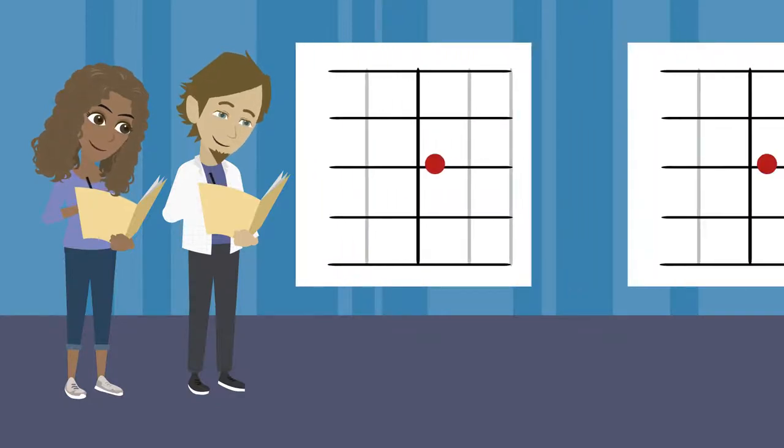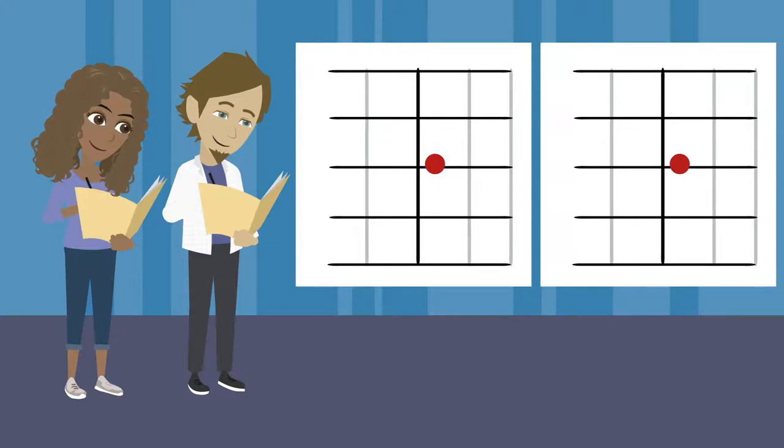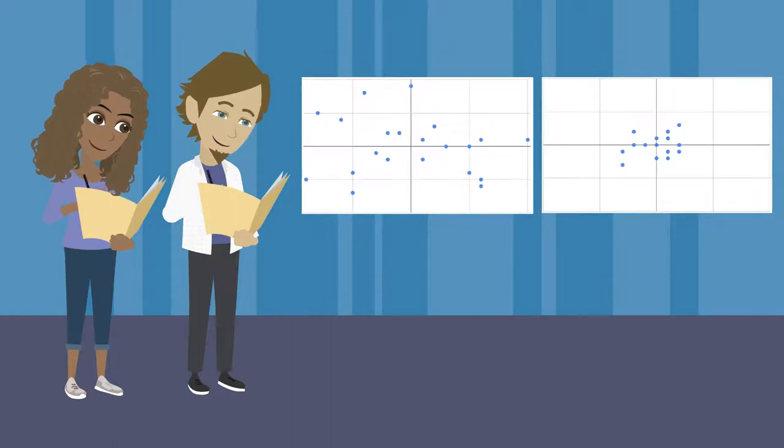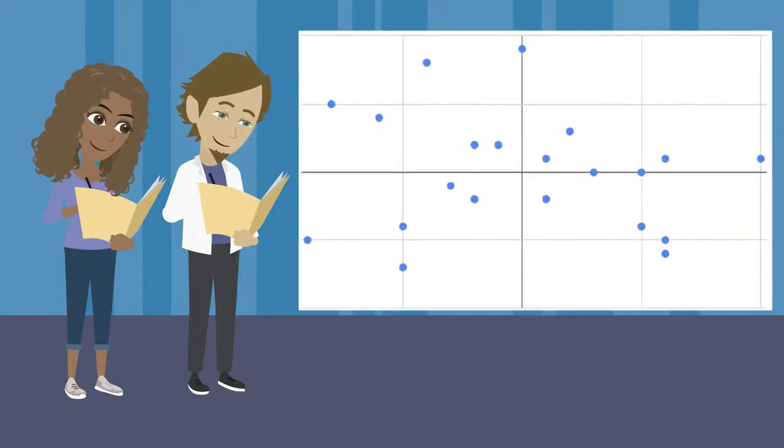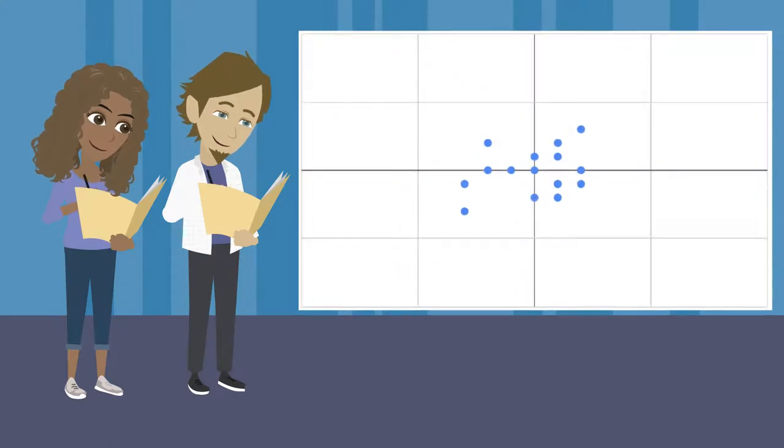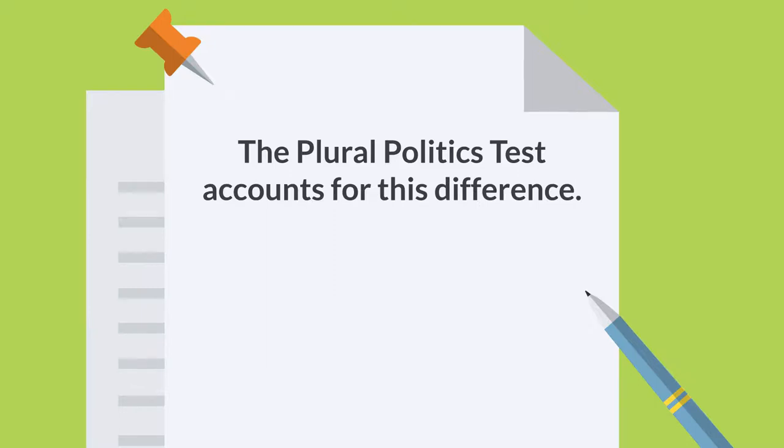That test would give each one the same exact result. It would term them both centrists and call it a day. But these are clearly rather different types of people. One person has eclectic views that would be hard to predict. The other person has predictable, middle-of-the-road views. The Plural Politics Test accounts for this difference.